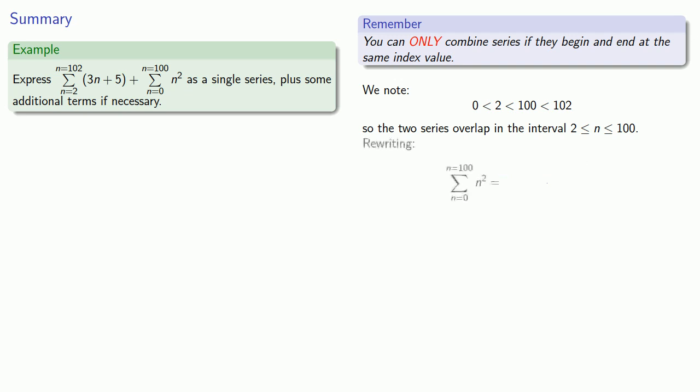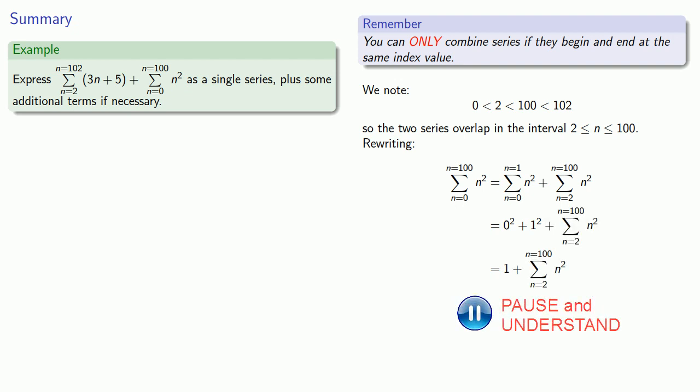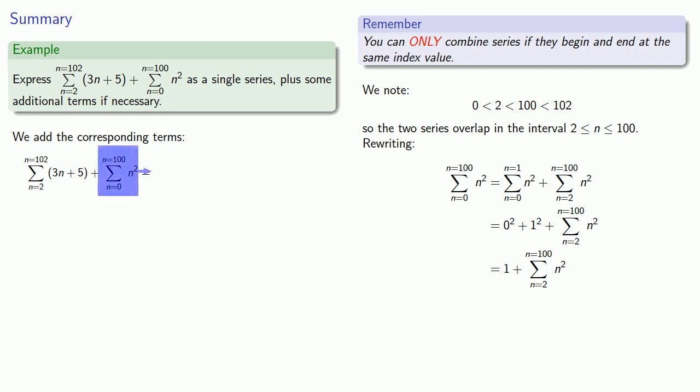We'll want to use our ability to break a series apart into a series that runs from 2 to 100 plus whatever the leftover bits are. So the first series that runs from 0 to 100 can be broken apart into a portion that runs from 0 to 1 and a portion that runs from 2 to 100. But this first bit is just the two terms 0 squared plus 1 squared, that's 1, plus the remaining part of the series.